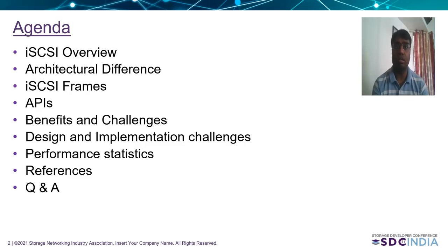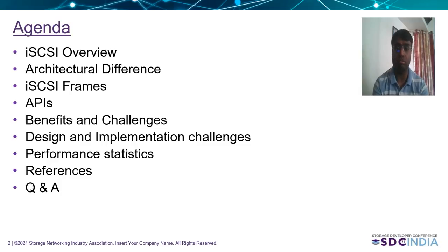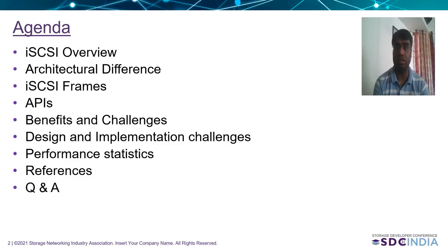Then we'll go into a little more detail understanding about who is responsible for generating the headers and packets in the case of HBA offload of iSCSI versus the host solution. Then we'll talk about the different APIs that both comparative models offer — what's available for TCP/IP on a host versus when we offload TCP/IP or the complete iSCSI stack over the HBA. Then Subhajit will talk about benefits, challenges, design and implementation implications, performance statistics, and finally references and Q&A.